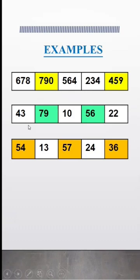Next one: 43, 79, and 10. 43 and 10 are the adjacent cells of 79. 79 is greater than its adjacent cells, therefore 79 is the supercell.